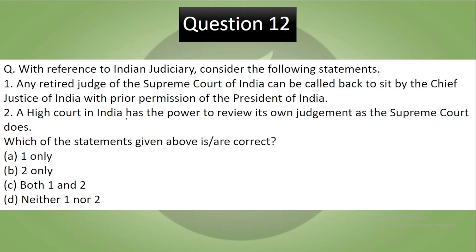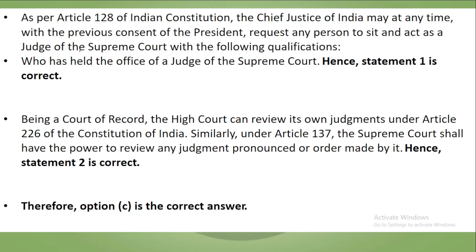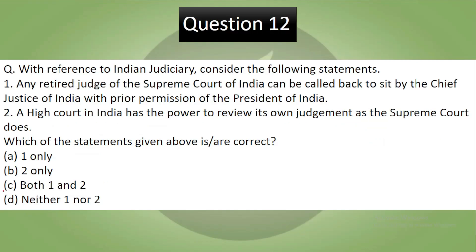The correct answer is C — both statements are correct. As per Article 128 of the Constitution, the Chief Justice of India may at any time, with the previous consent of the President, request any person who has held the office of judge of the Supreme Court to sit and act as a judge. So statement 1 is correct. Being a court of record, the High Court can review its own judgments under Article 226, and similarly the Supreme Court has review power under Article 137. Both courts have the power of review.